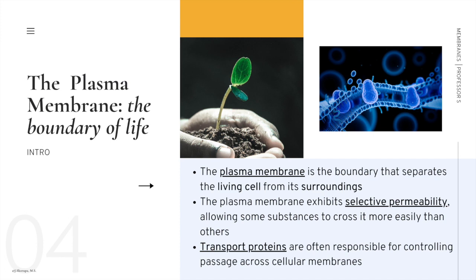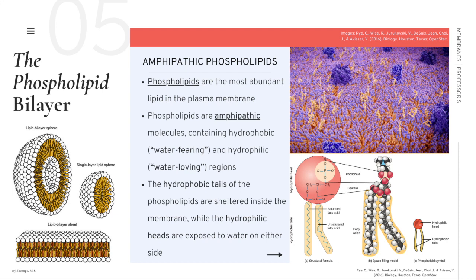The plasma membrane is the boundary that separates the living cell from its surroundings. Every single cell has a plasma membrane, whether prokaryotic or eukaryotic. Its most crucial role is as a selectively permeable barrier, which allows some substances to cross more easily than others. This selectivity is so important to a cell's ability to regulate homeostasis and maintain controlled interactions with its environment, including how transport proteins are often responsible for controlling passage across cellular membranes.